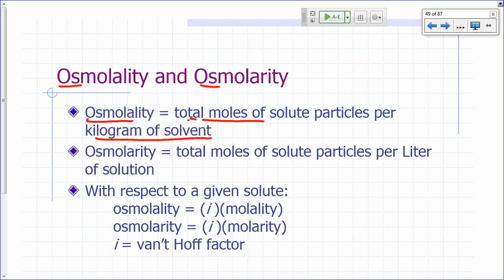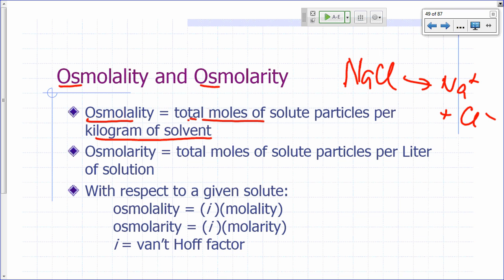Recall that molality is moles of solute per kilogram of solvent. So if you want to count the particles separately — for example, if you have sodium chloride in water, it's going to break up into sodium and chloride ions. When dealing with osmolality, you count the sodium separately from the chloride and add them all up to get your osmolality.